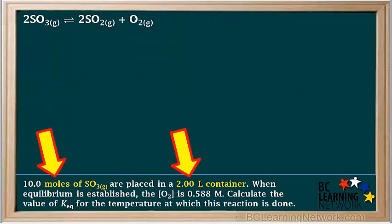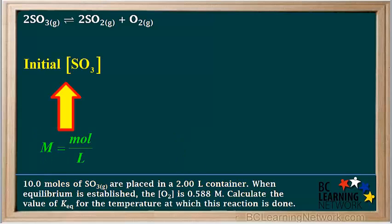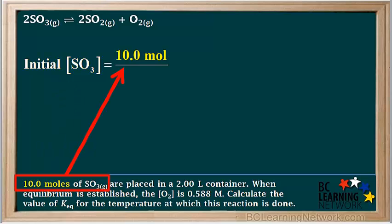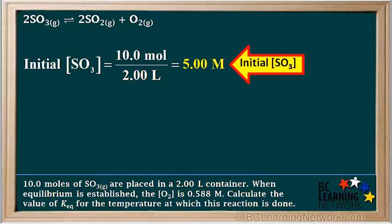Notice we are given the moles of SO3 and the volume of the container in liters. In equilibrium calculations, we deal with molar concentrations or molarity. So we need to change the initial moles of SO3 to the concentration of SO3. Molar concentration equals moles over liters. So the initial concentration of SO3 equals 10 moles divided by 2 liters, which equals 5 molar.